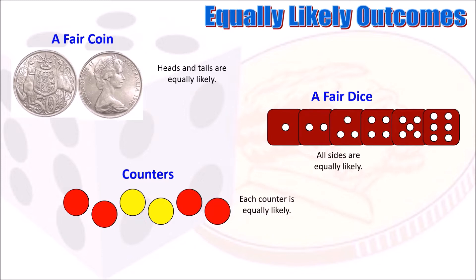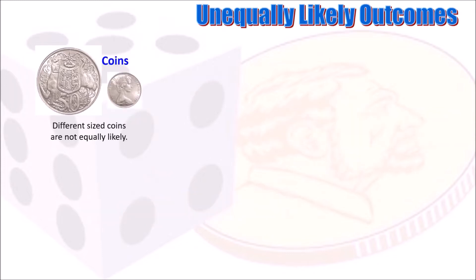When you roll the dice, all faces are equally likely to come up. With counters of the same shape and size, if you are not looking you will not be able to identify the colors, so you cannot choose according to color. You will be choosing one at random without looking, and we say that all counters have an equally likely chance to be chosen.